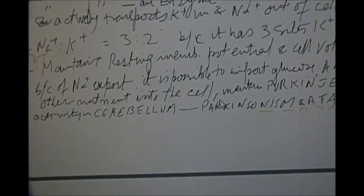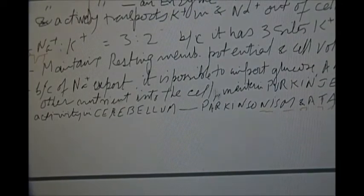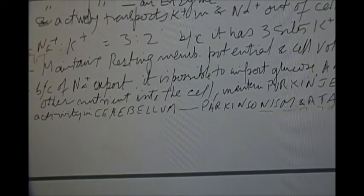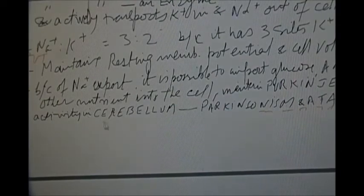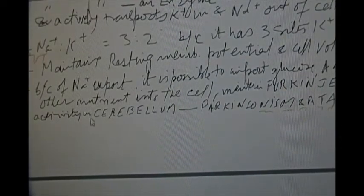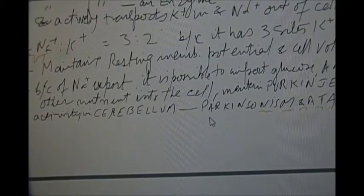In the brain, the sodium potassium pump maintains Purkinje tissue activity in the cerebellum. If the pump is inhibited or is abnormal, it causes Parkinsonism and ataxia.